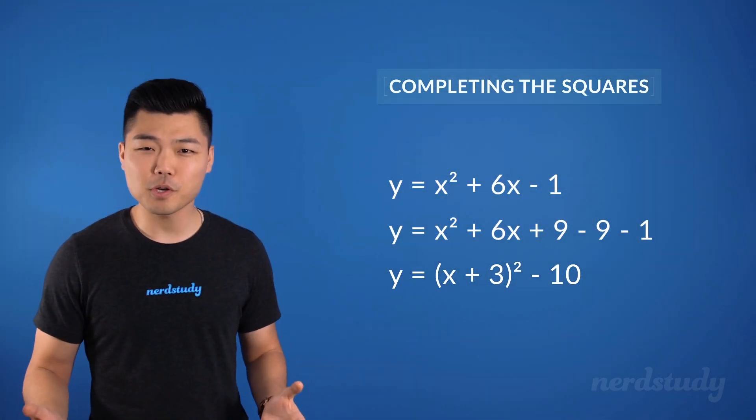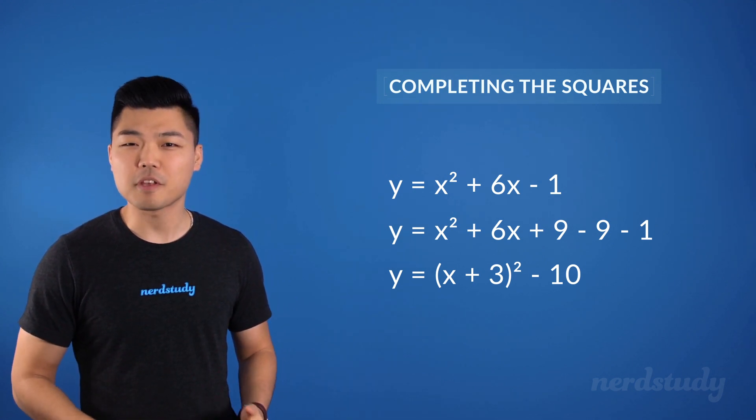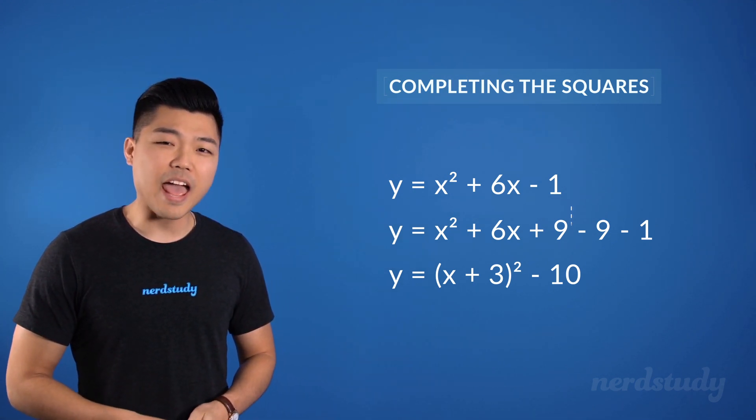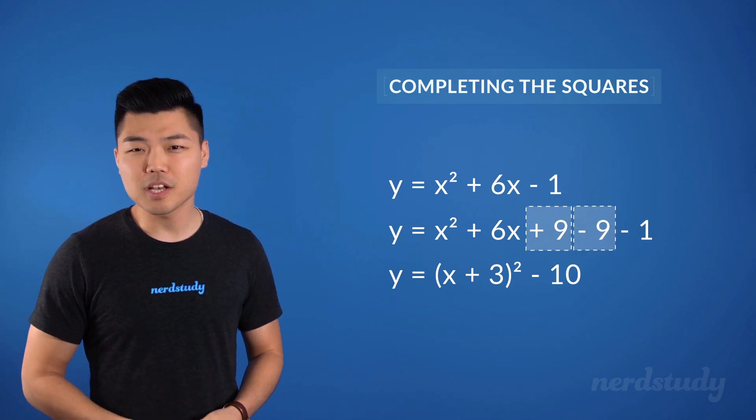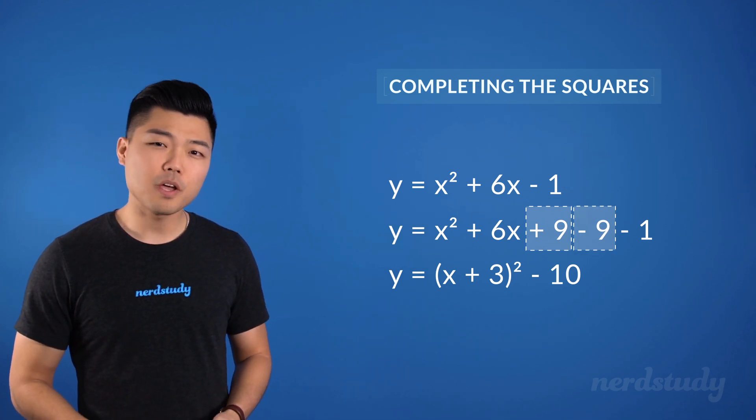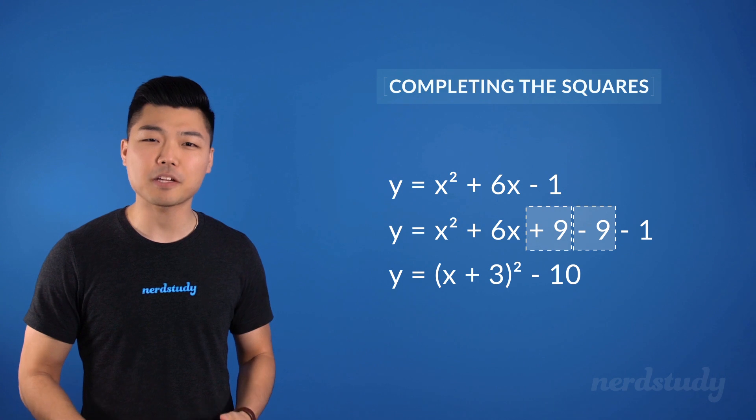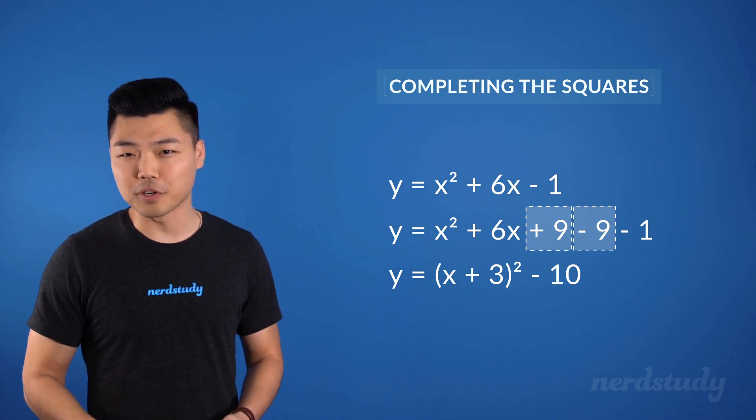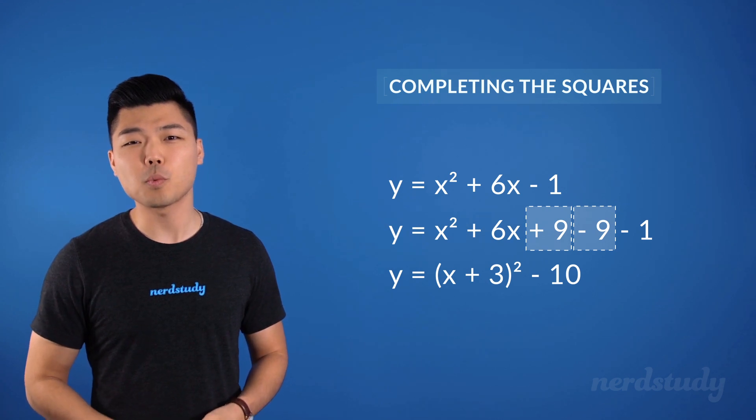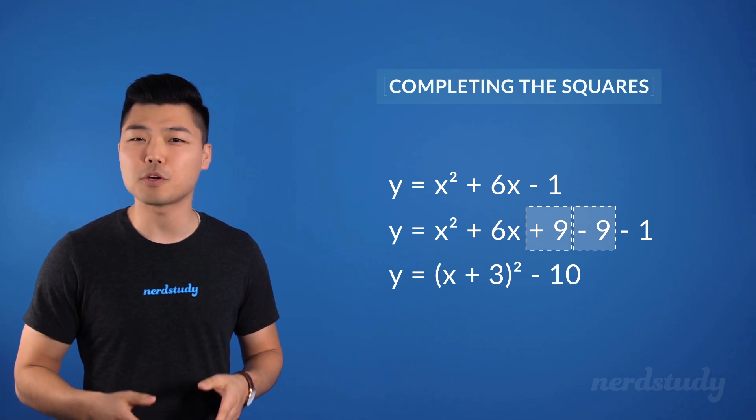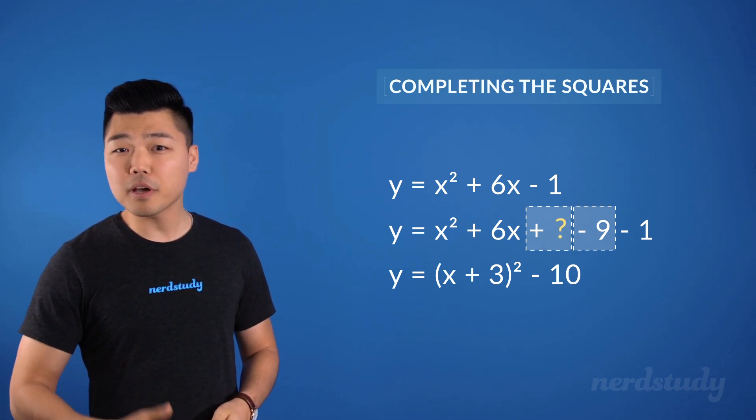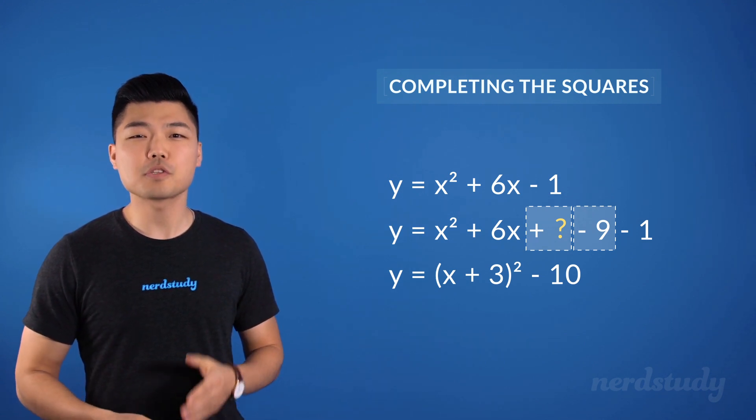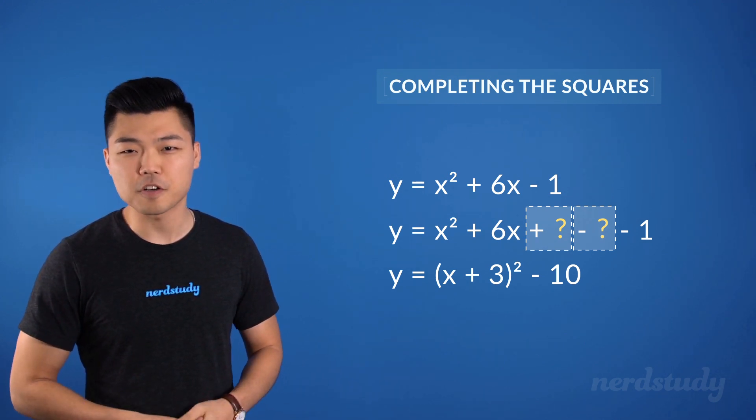So, what did we learn from this? We realized that we can add or subtract numbers into the standard form to make sure that it can become factored into the vertex form. But we also learned that we need to do this while not changing the actual equation. So if we add by a certain number, we must also subtract by that same number and vice versa.